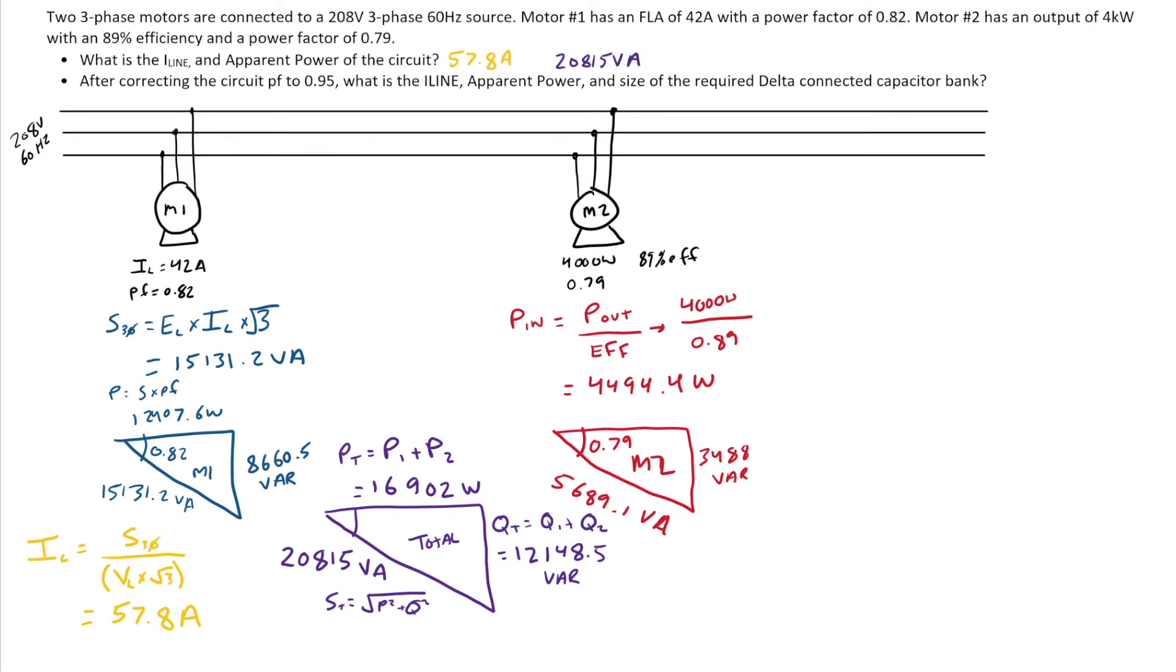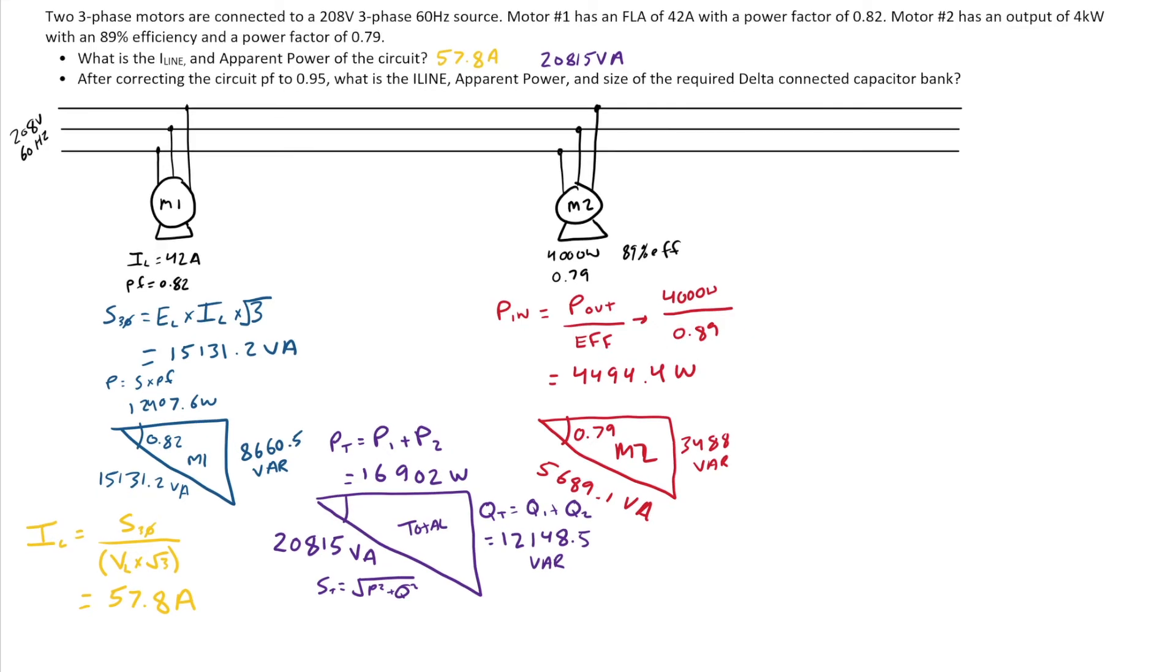Now, next up, it is asking us to power factor correct the circuit to 0.95. Now, we've got to remember the goal of power factor correction is always to reduce the incoming line current. The goal is to reduce the current leaving my source. It's not going to change the current going to each motor. Nothing about the motors will change.